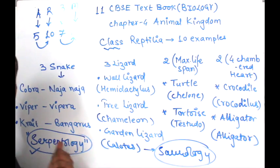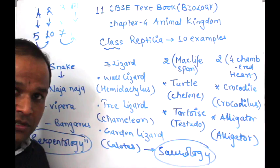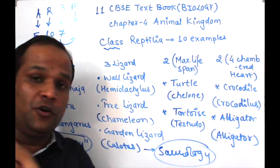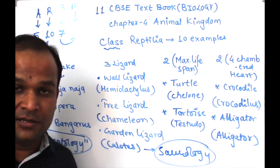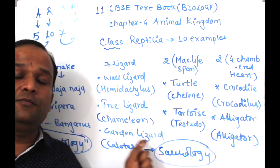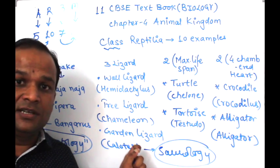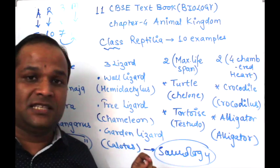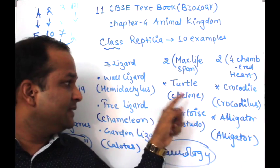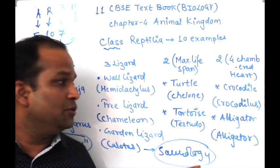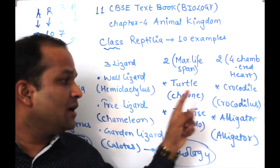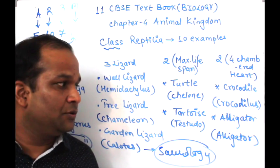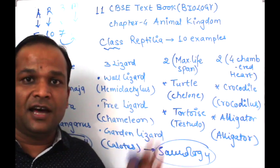Important point: all 3 snakes are poisonous. All 3 lizards are not poisonous — there is only one poisonous lizard known. 2 have maximum life span — Turtle and Tortoise. 2 have a 4-chambered heart — Crocodile and Alligator. Total examples given are 10.